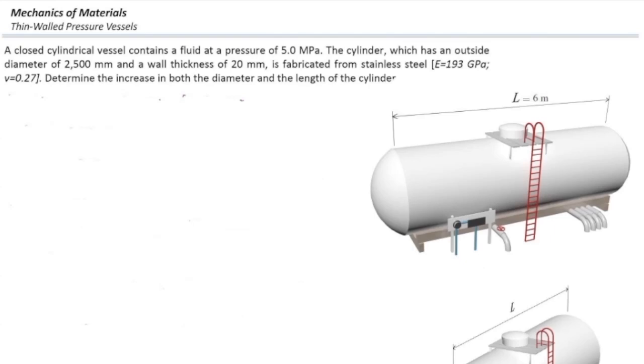The cylinder has an outside diameter of 2,500 mm and a wall thickness of 20 mm, and it's fabricated from stainless steel, which has the modulus of elasticity of 193 gigapascals and Poisson's ratio of 0.27. We want to determine how much is the change in the diameter and the length of the cylinder after we pressurize the gas or liquid inside this vessel.